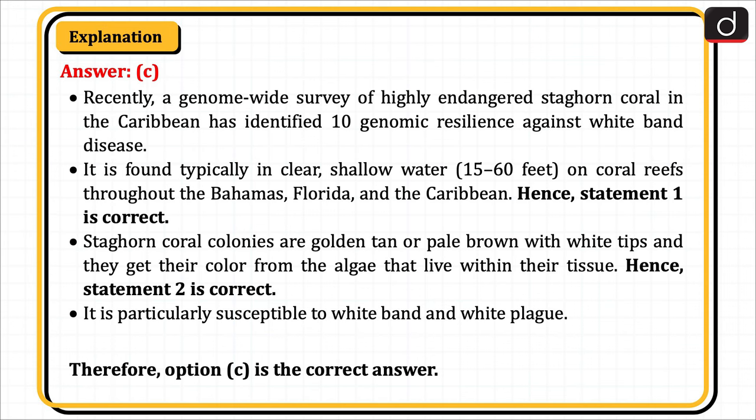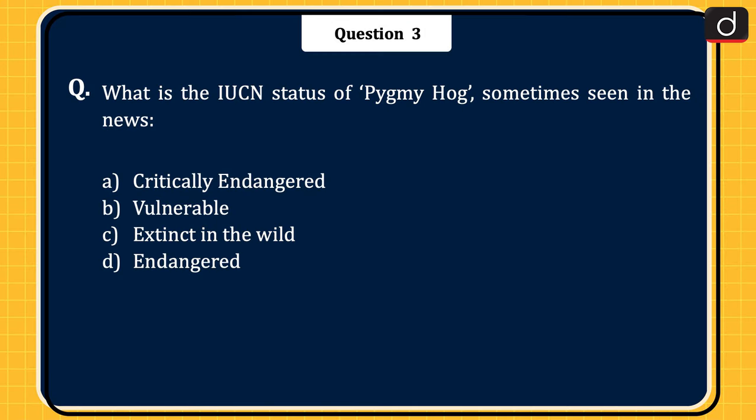Recently, a genome-wide survey of highly endangered staghorn coral in the Caribbean has identified 10 genomic resilience markers against white-band disease. It is found typically in clear shallow water of 15–60 feet on coral reefs throughout the Bahamas, Florida and the Caribbean. Hence, statement 1 is correct. Staghorn coral colonies are golden tan or pale brown with white tips, and they get their color from the algae that live within their tissue. Hence, statement 2 is correct. It is particularly susceptible to white band and white plague. Therefore, option C is the correct answer.